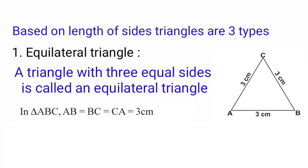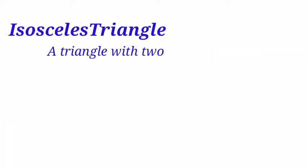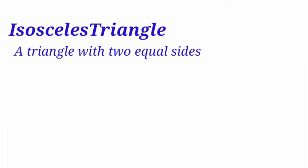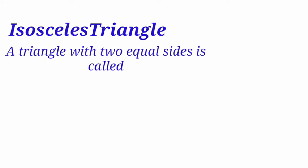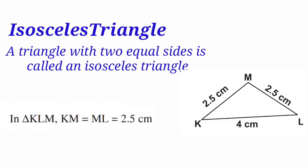Second type: isosceles triangle. A triangle with two equal sides is called an isosceles triangle. Observe the figure — in triangle KLM, the side KM equals ML, which is equal to 2.5 centimeters.